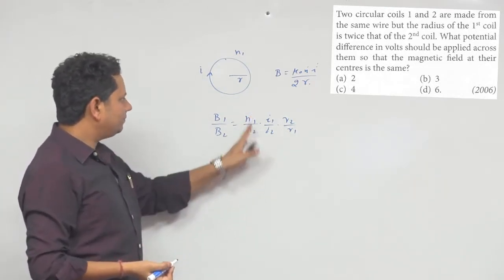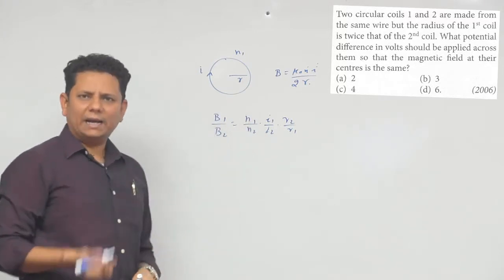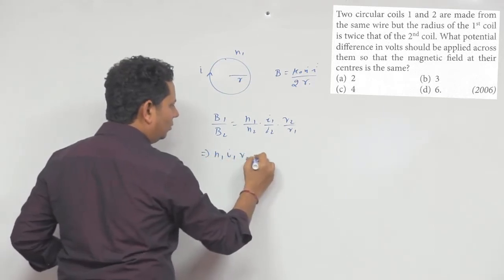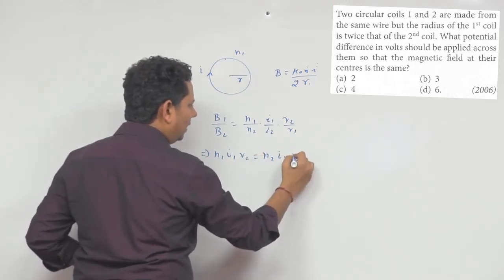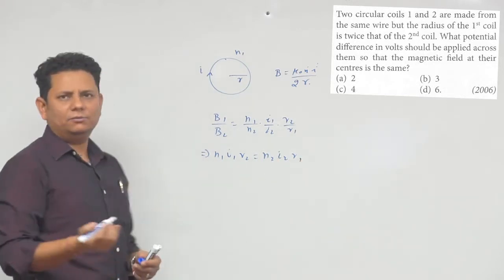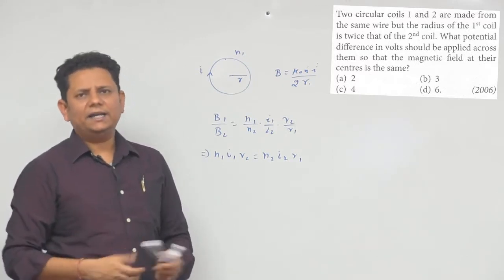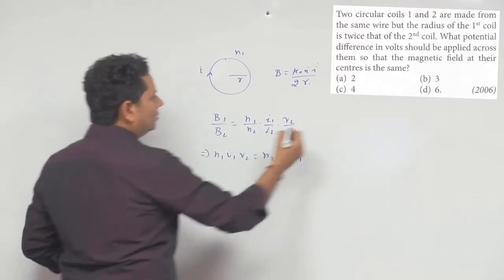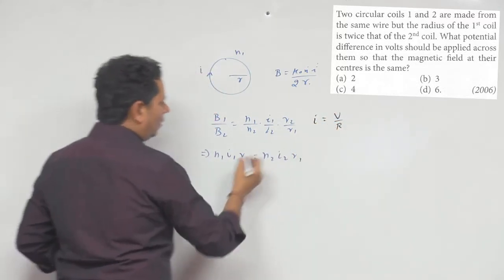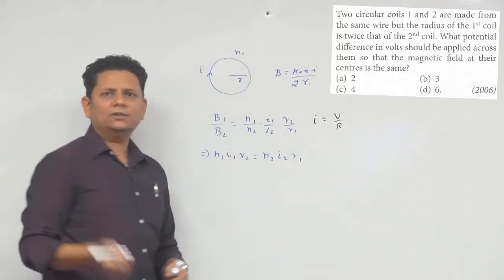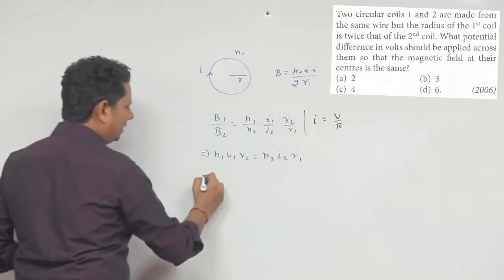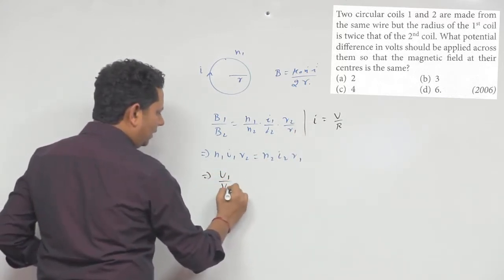हमें कहा जा रहा है कि B1 और B2 बराबर हैं। तो B1 = B2 implies N1·I1·R2 = N2·I2·R1। अब potential difference लगाएँगे — current I को V/R से replace कर सकते हैं, क्योंकि I = V/R (capital R = resistance)।